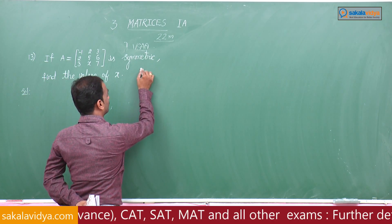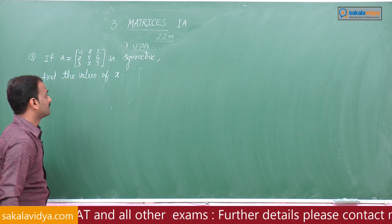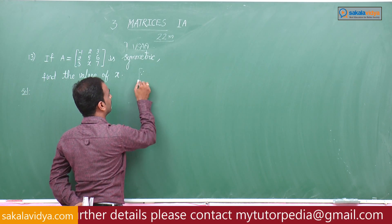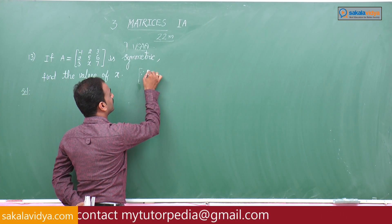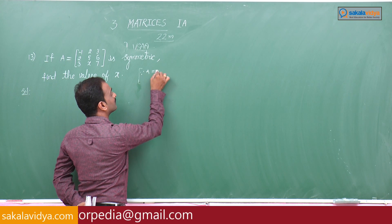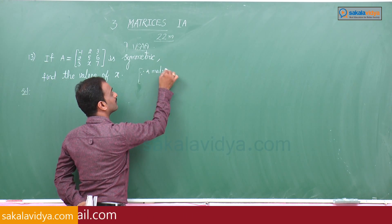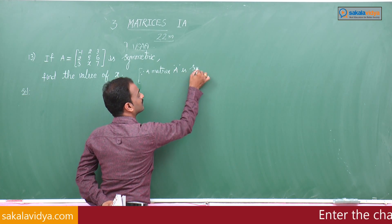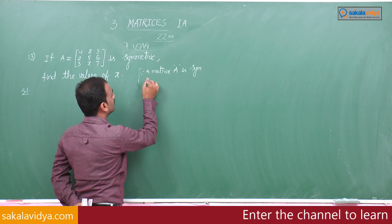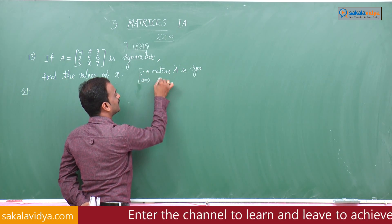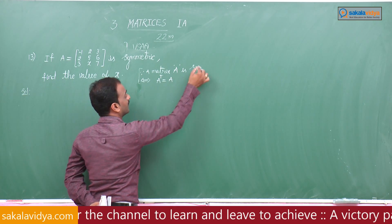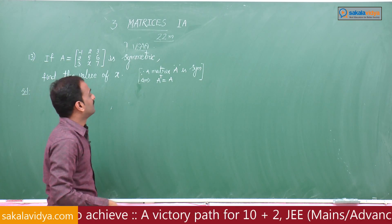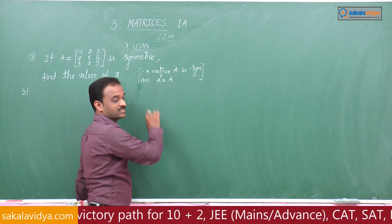Definition of symmetric matrix: what is meant by symmetric? A matrix capital A is symmetric if and only if A transpose is equals to A. The definition of a symmetric matrix is A transpose equals A.